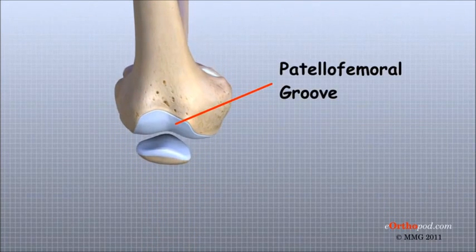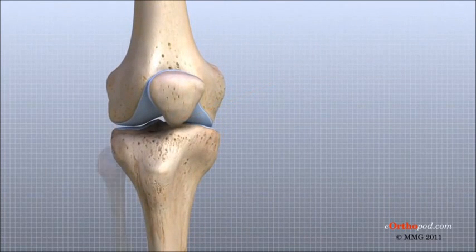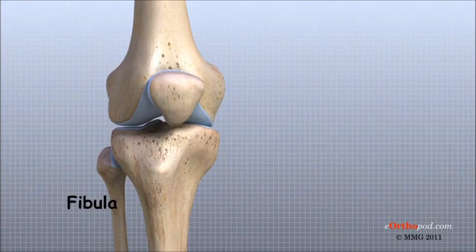The smaller bone of the lower leg, the fibula, never really enters the knee joint. It does have a small joint that connects it to the side of the tibia, but this joint normally moves very little.